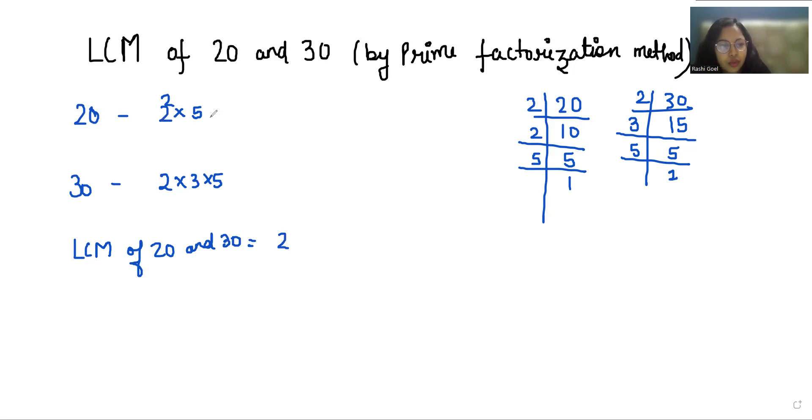In the first we have 2 and 5, then 2, 3, 5. So what are the prime numbers? 2, 3, and 5. Now write their highest power: 2 has highest power 2 power 2, 3 has 1, and 5 has also 1.